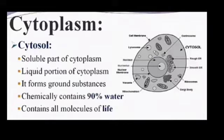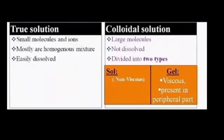In addition, the soluble parts of cytoplasm are called cytosol. It is formed of two types of solutions. Two types of solutions are called true solutions and colloidal solutions. What are true solutions?